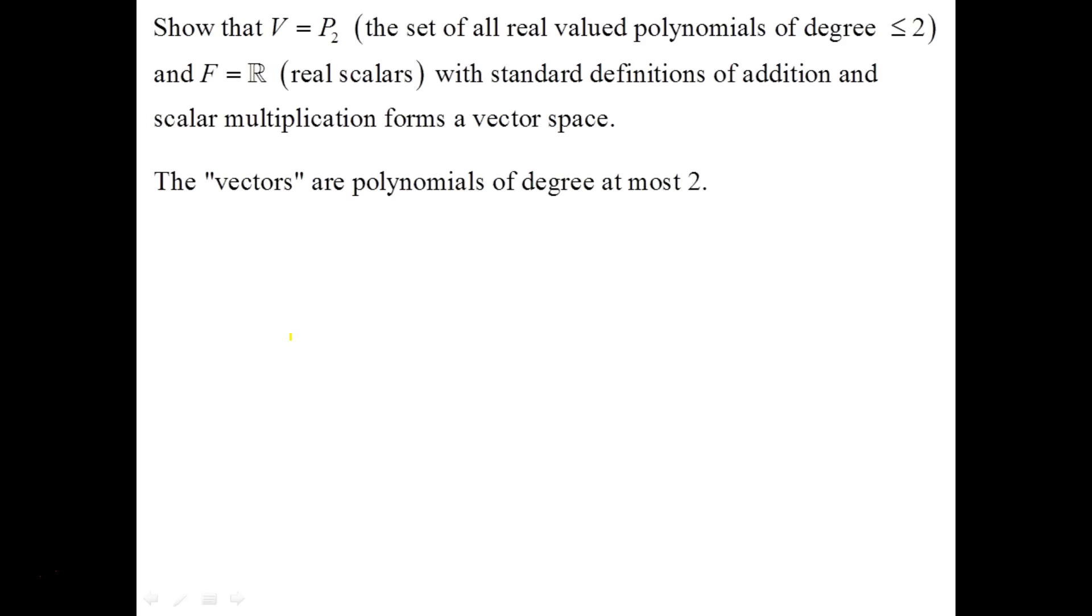So, we call them vectors, air quotes, but they really are polynomials of degree at most 2. Okay, let's take a look at that. What is an example of that? So, we'll call it P, and we have quadratic or lower polynomials. So, we have a2 times x squared and a1 times x and a0 as a generic vector, a generic polynomial in our vector space. We're going to show it's a vector space. And we need to have those coefficients, a0, a1, and a2, be real numbers.